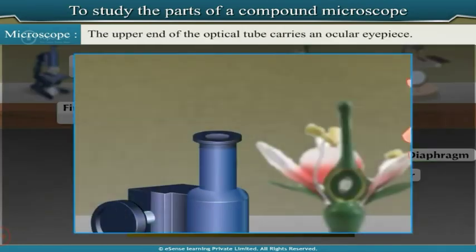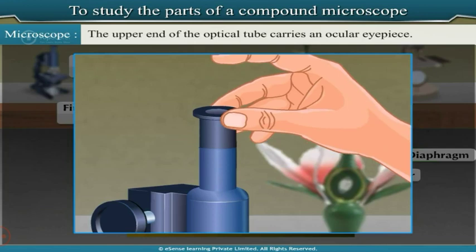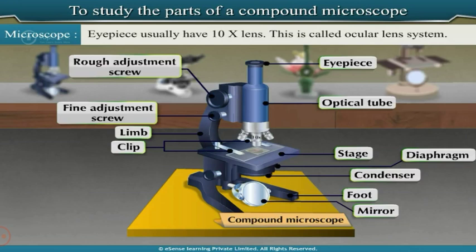The upper end of the optical tube carries an ocular eyepiece, which usually has a 10x lens. This is called the ocular lens system.